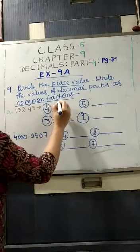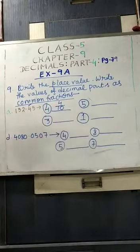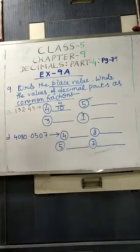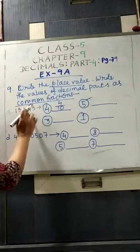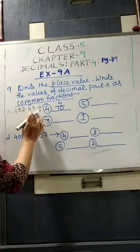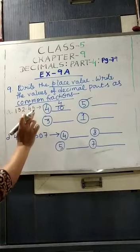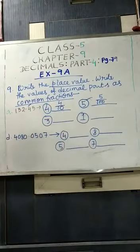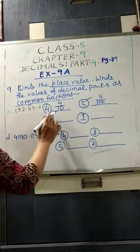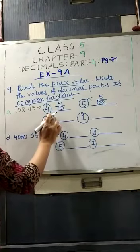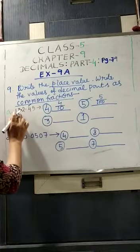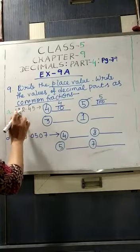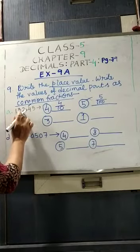Now the second one, 5. You can see that 5 is after the decimal in second position, that means hundredths place, so we will write 5 by 100. Clear? Now the third one is 3. You see that 3 is in tenth position before decimal, whole number 132.